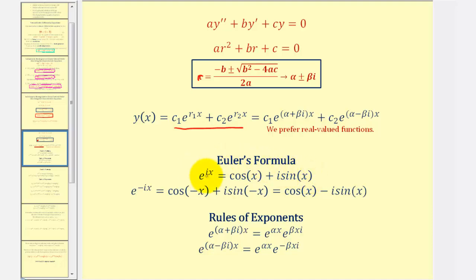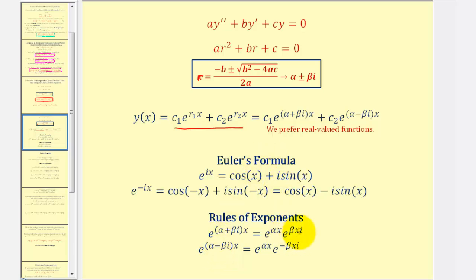Here's Euler's formula. Notice if you replace the exponent with negative ix, we would have cosine negative x plus i sine negative x. But since the cosine function is even, cosine negative x equals cosine x, and sine negative x equals negative sine x, giving us minus i sine x. For the rules of exponents, notice here we have a sum of exponents, so distributing gives us e raised to alpha x times e raised to beta xi. And when we have a difference, we would have a negative exponent in the second factor.